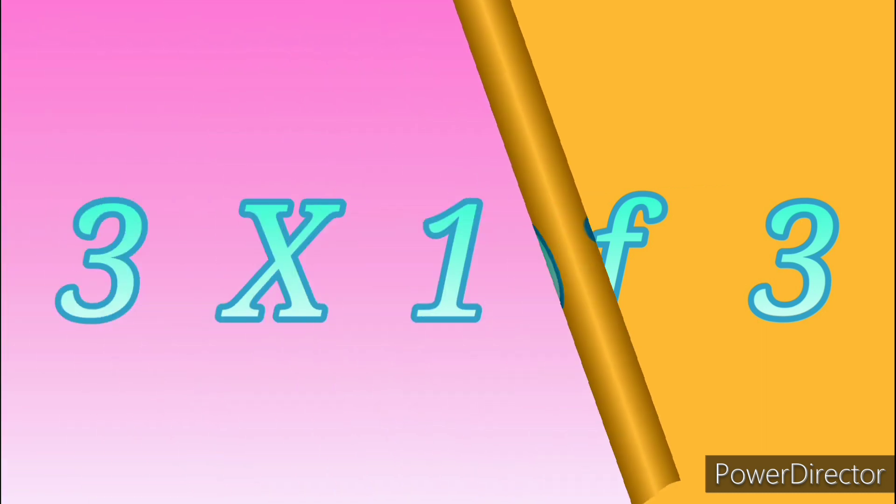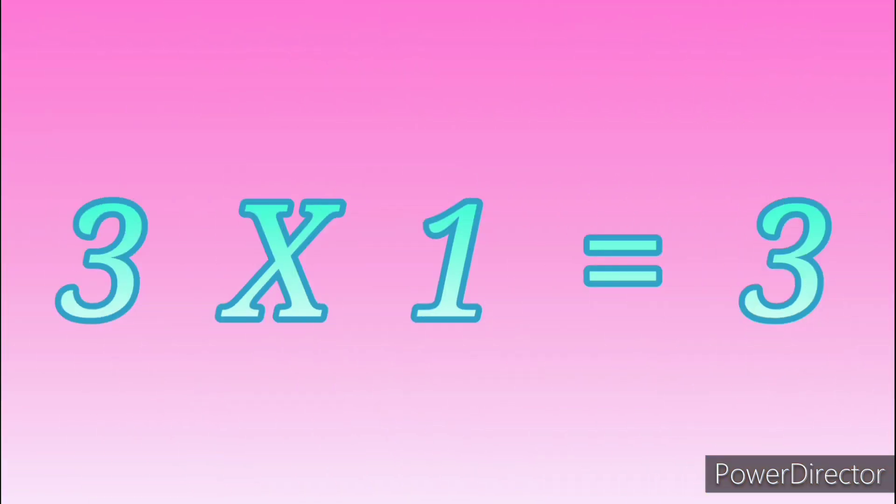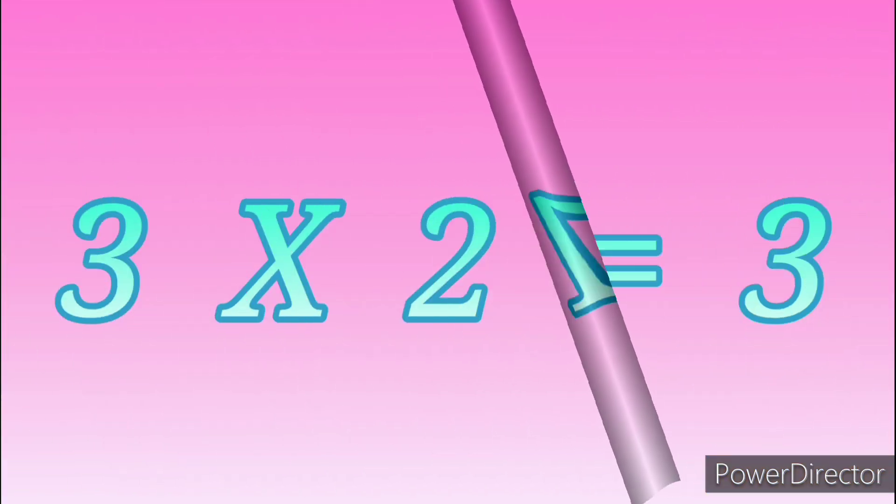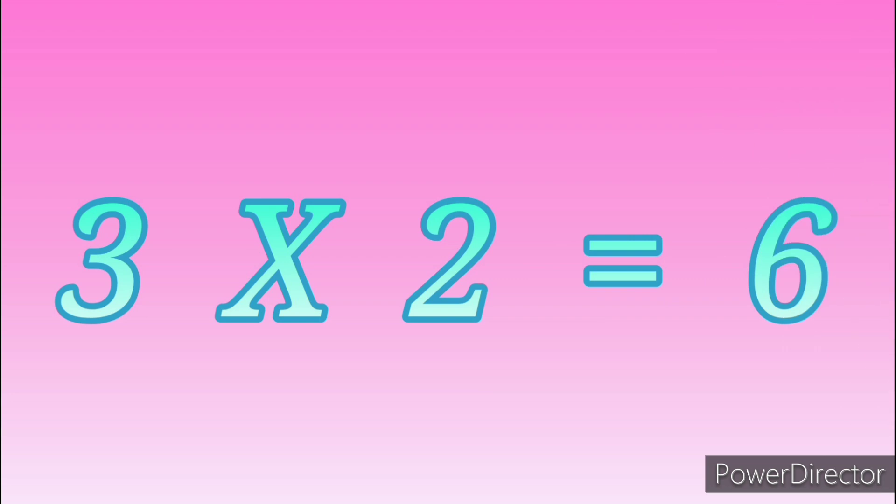Table of Three. 3 ones are 3, 3 twos are 6.